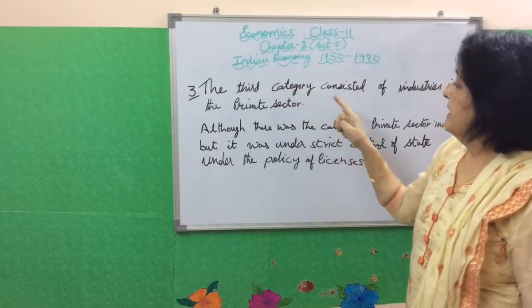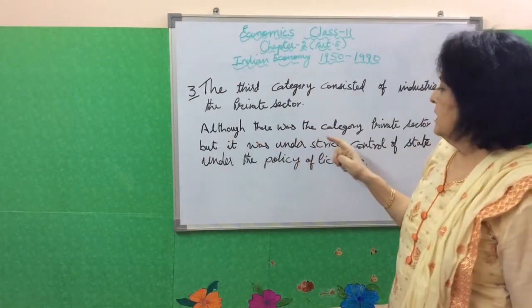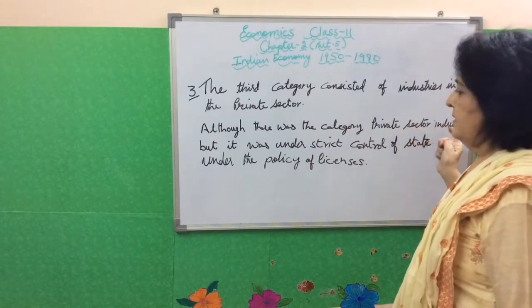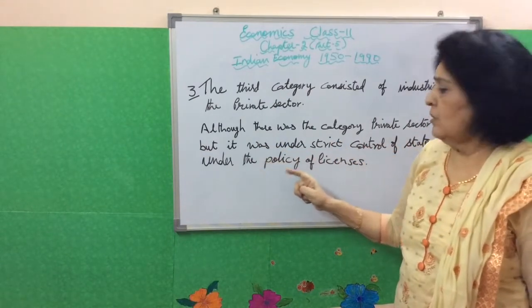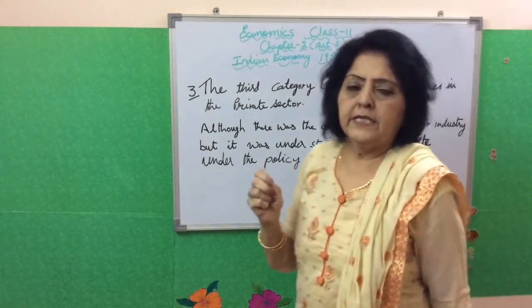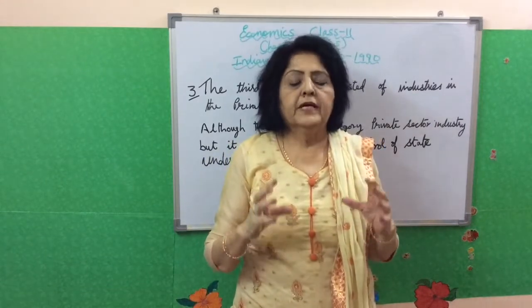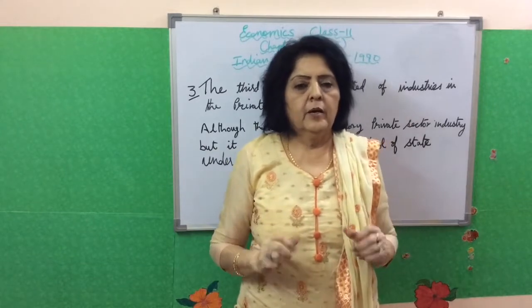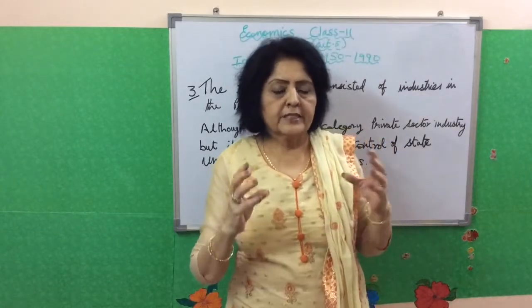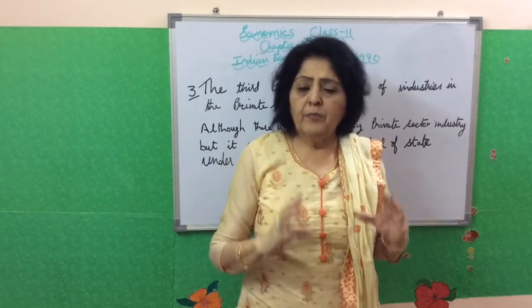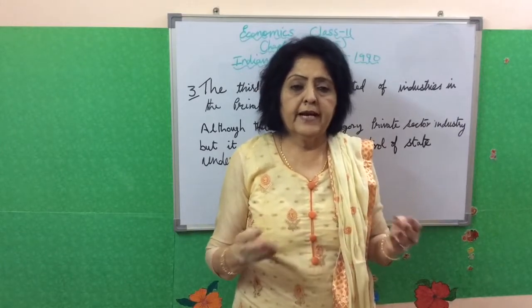The third category consisted of industries in the private sector. Although there was a category for private sector industry, it was under the strict control of the state under the policy of licenses. With this policy, the government tried to develop economically backward regions. Private industries were given licenses and concessions to establish industry in economically backward regions, including benefits like tax concessions and lower rates of electricity.